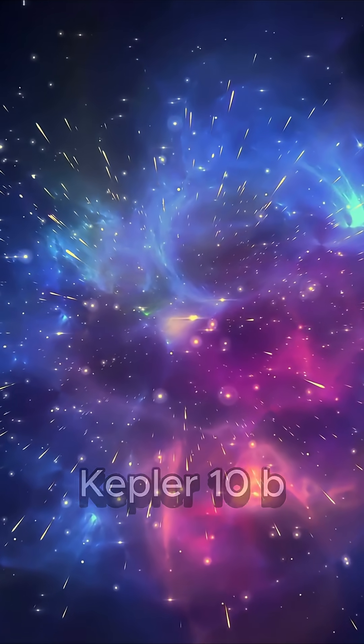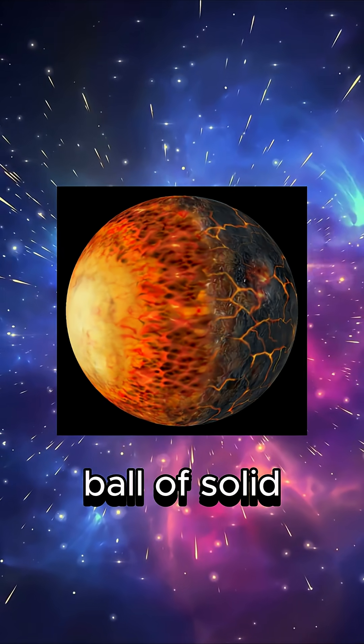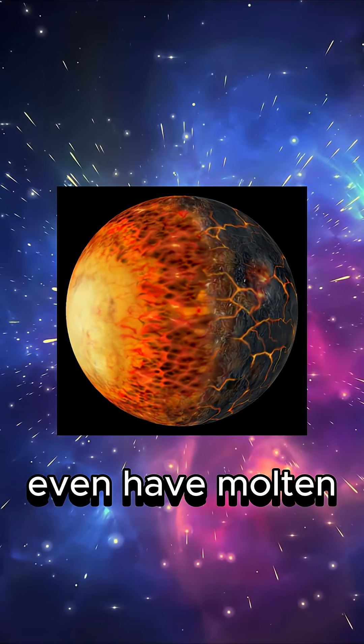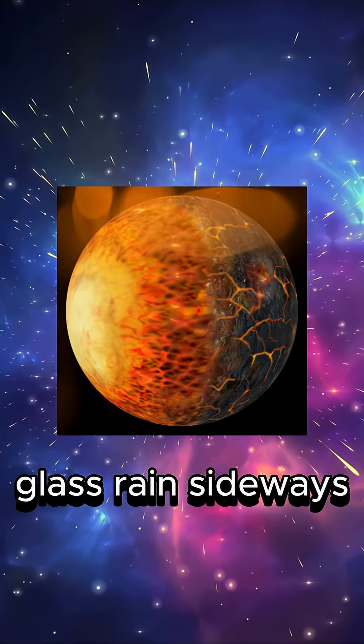Number three, an iron planet. Kepler-10b is a massive ball of solid metal. Some similar planets even have molten glass rain, sideways.